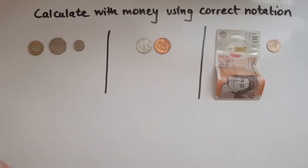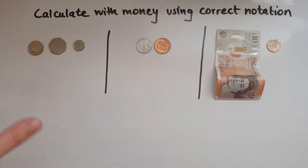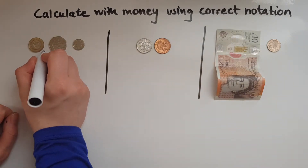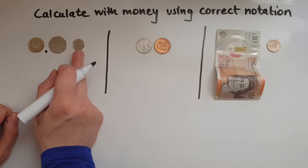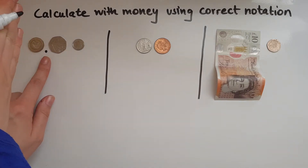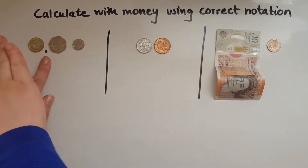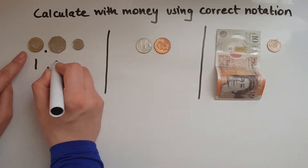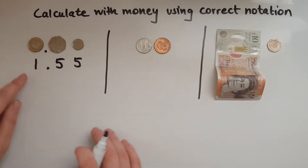I've got this amount of money lined up based on their value, because in terms of money, when we write them down, the coins with the higher value come first — and that's how we calculate money. As you can see, I've got a pound, 50 pence, and 5 pence. The decimal point separates the pounds from the pence, always.